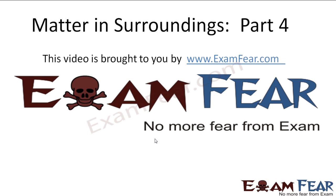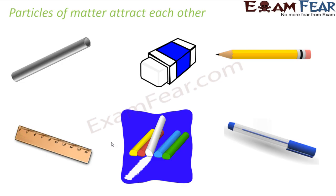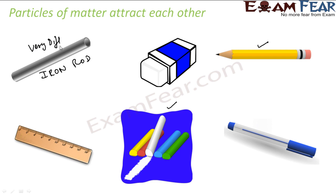Hello friends, this video on matter and surroundings part 4 is brought to you by examfear.com. Another property is that the particles of matter actually attract each other. To demonstrate this, let's try to break an iron rod — it will be difficult. A wooden scale is a little easier. Rubber feels different. Chalk is pretty easy to break. A plastic pen is difficult, and a pencil is easy. All of these are matter because they have mass, but breaking them is not the same.